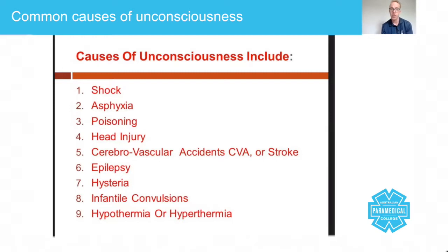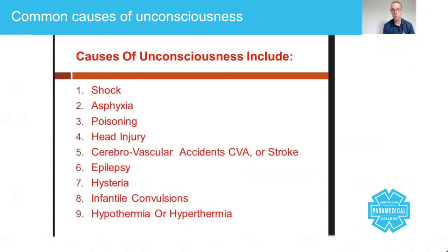By semi-conscious, we mean somebody who is on the way down to being unconscious but is not quite there yet. They still have a level of GCS about them, but they're not quite GCS of three — being unresponsive. By post-unconsciousness, we mean after the event and starting to come around.